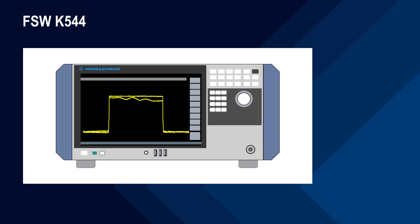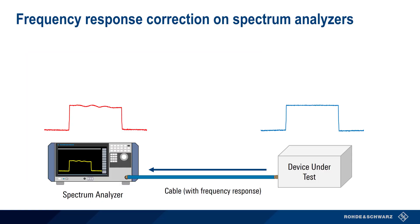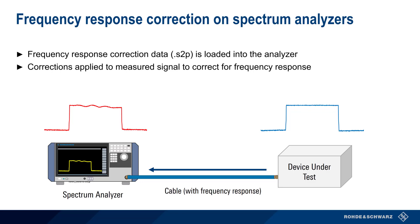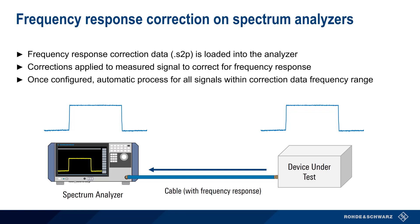Now let's take a look at frequency response correction on Rohde and Schwarz spectrum analyzers. We'll use the FSW for all of our examples, but what you learn here also applies to the FSV3000 series analyzers as well. Recall that frequency response correction on a spectrum analyzer is designed to correct for the frequency response of devices or components between the device under test and a spectrum analyzer. As in the case of signal generators, frequency response correction data in the form of S2P files are loaded into the analyzer. The analyzer then applies these corrections to the measured signal to remove the effects of frequency response, so the signal seen by the analyzer is the same as the signal at the DUT output. Spectrum analyzers automatically apply the loaded and configured corrections to all signals within the correction data range, without any additional user intervention.